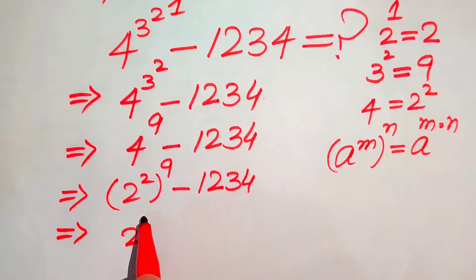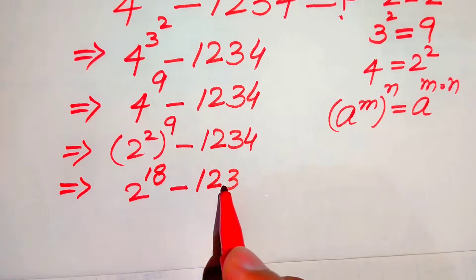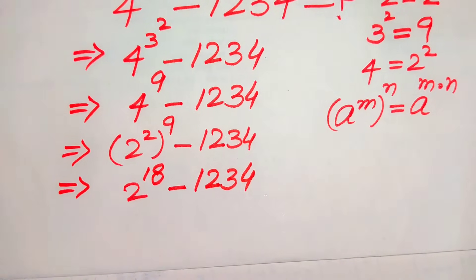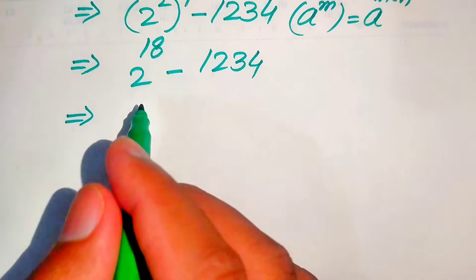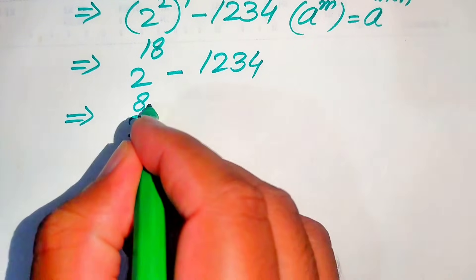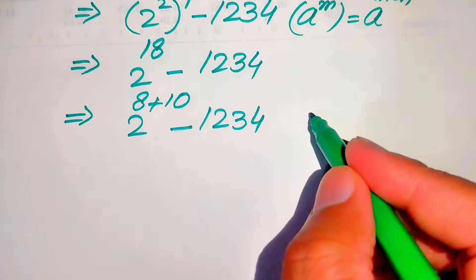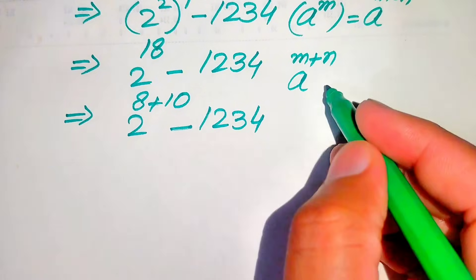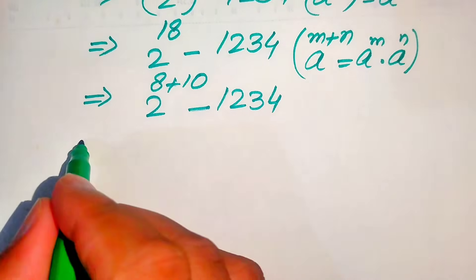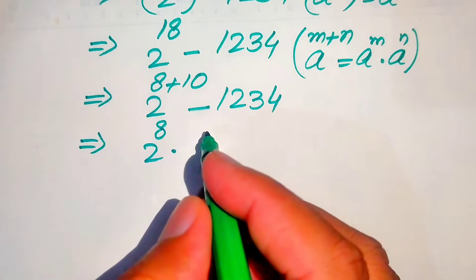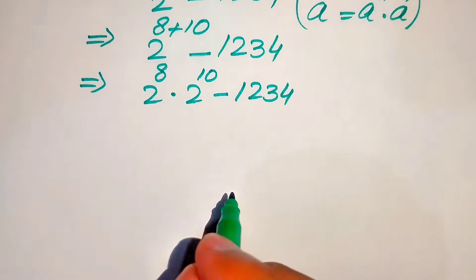To move further, we split the exponent: 2 to the power of 18 is written as 2 to the power of 8 plus 10 minus 1234. We apply the exponent law: a to the power of m plus n equals a to the power of m multiplied by a to the power of n. This gives us 2 to the power of 8 multiplied by 2 to the power of 10, minus 1234.